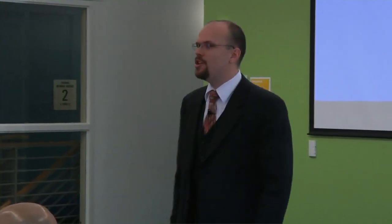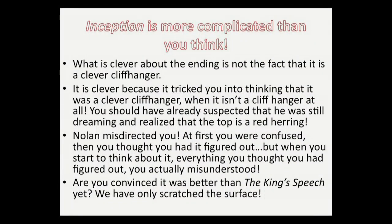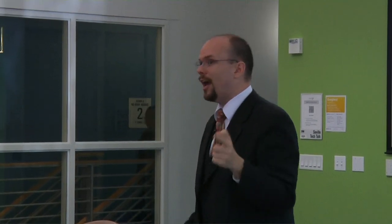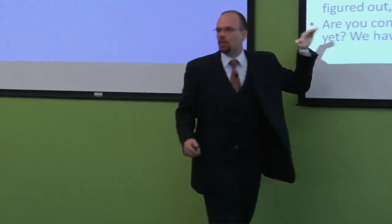Inception's more complicated than you think. What's clever about the ending is not the fact that it's a clever cliffhanger. It's clever because it tricked you into thinking it was a clever cliffhanger when it wasn't a cliffhanger at all. You should have already suspected that he was still dreaming and realized that the top was a red herring. That's what's clever about it. Nolan misdirected it. It lends itself to multiple interpretations. Are we convinced that it was better than the King's Speech yet? But we've only scratched the surface.